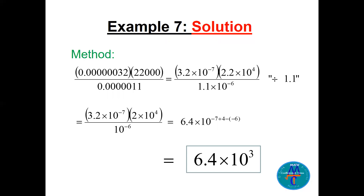First number: 0.000032 — move 7 decimal places to get 3.2 times 10 to the power minus 7. Second: 22,000 — move 4 places to get 2.2 times 10 to the power 4. Third: 0.000011 — move 6 places to get 1.1 times 10 to the power minus 6.